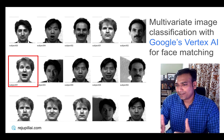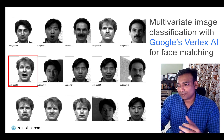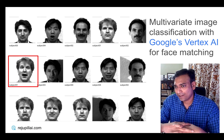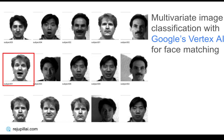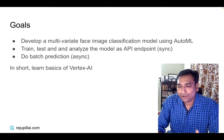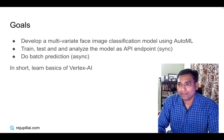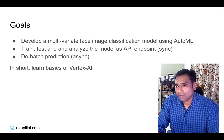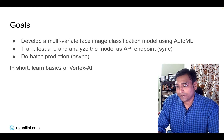So I decided to replicate some aspects of this project with almost no coding using Vertex AI. Now let's see how far we go with it. The goals for today are to develop a multivariate face-recognition classification model, train, test, and analyze the model as an API endpoint for synchronous calls, but also do a batch prediction for async calls.